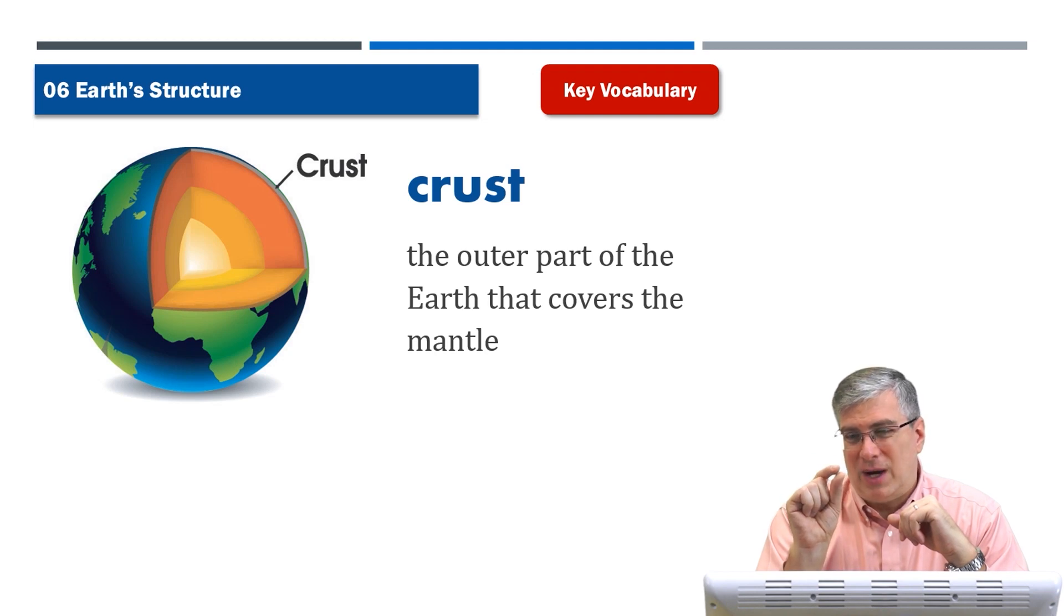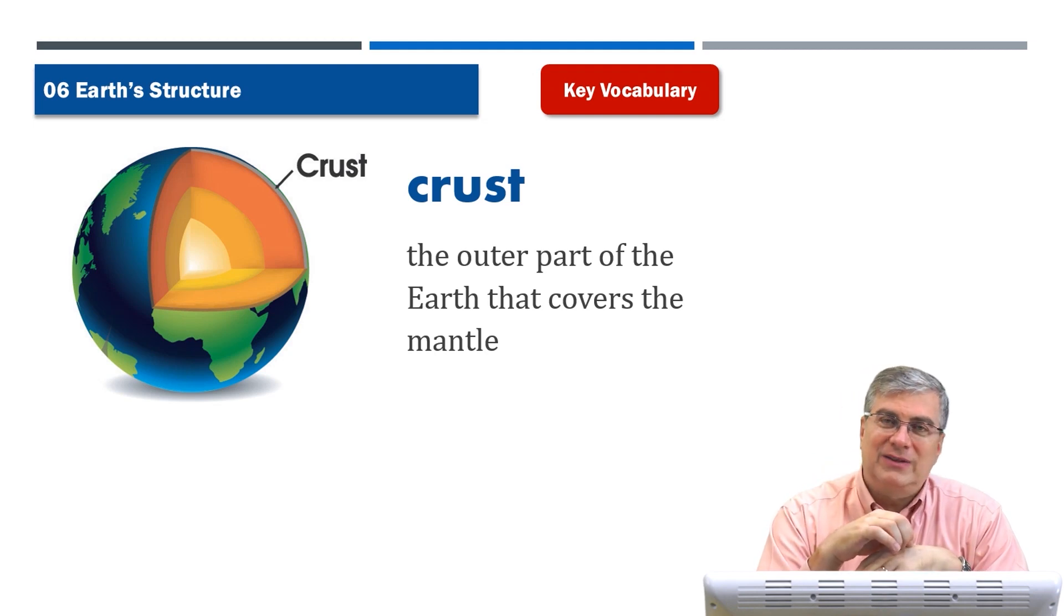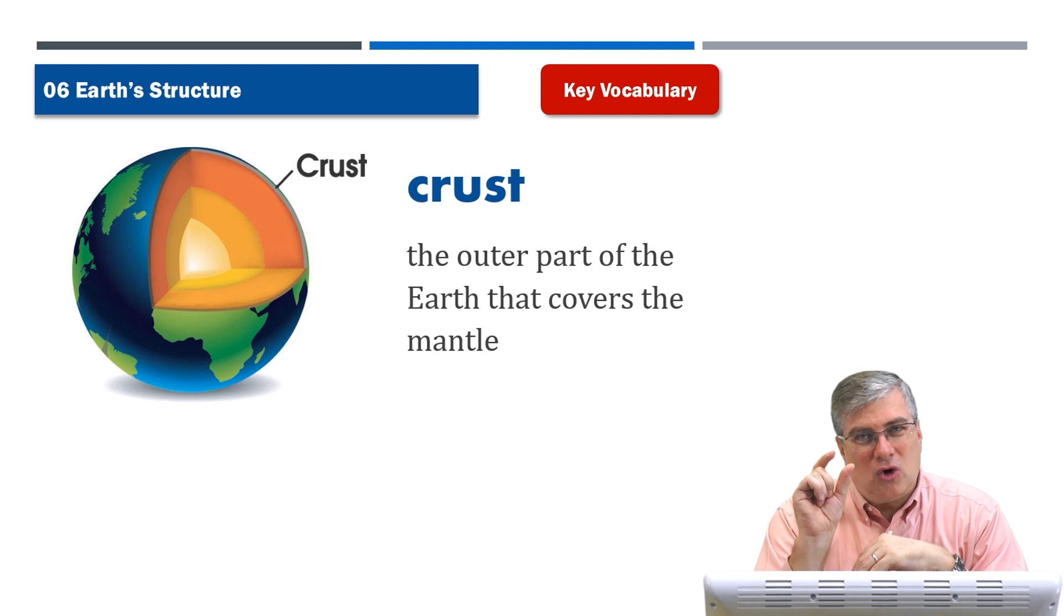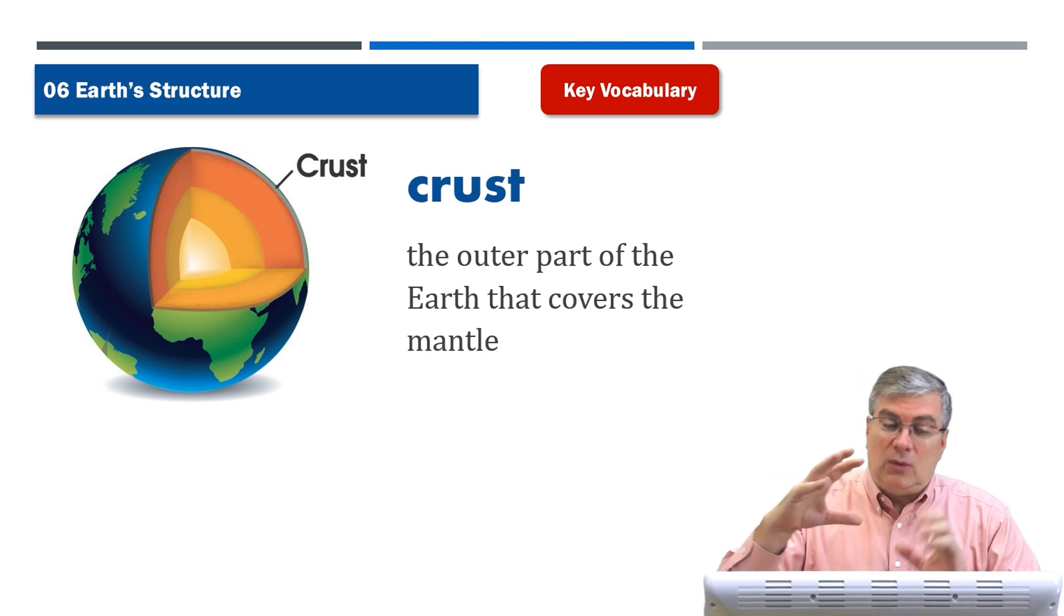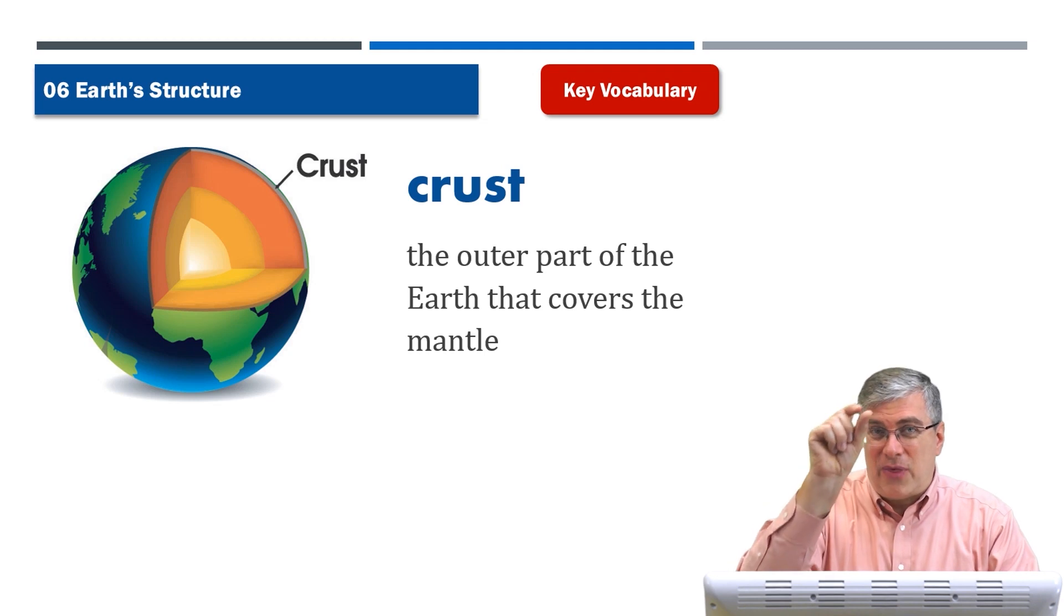Normally, we talk about, you know, like the crust of bread is very thin. The layer of my skin over my hand is very thin. But the crust of the earth is very, very thick, especially in relation to us, human beings, right? But that is the crust. It is in relation to the rest of the earth. It's kind of thin, and it covers the mantle. Okay? We'll talk about mantle next.